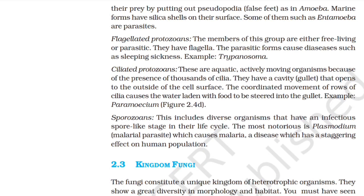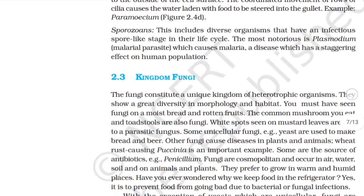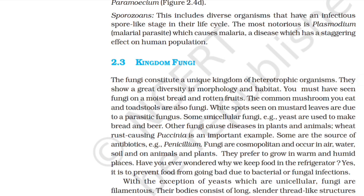Ciliated protozoans are aquatic, actively moving organisms due to the presence of thousands of cilia. They have a cavity called a gullet that opens to the outside of the cell surface; the coordinated movement of rows of cilia causes water laden with food to be stirred into the gullet. Sporozoans include diverse organisms that have an infectious spore-like stage in their life cycle. The most notorious is Plasmodium, the malarial parasite which causes malaria — a disease which has a staggering effect on human populations.